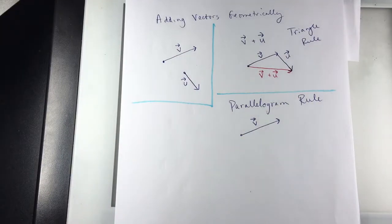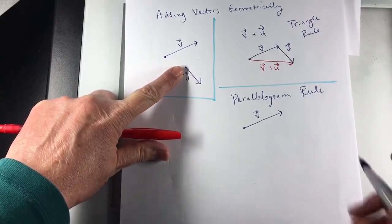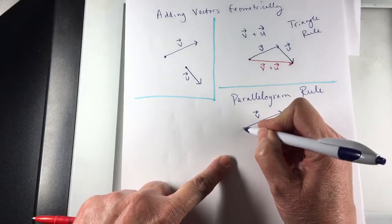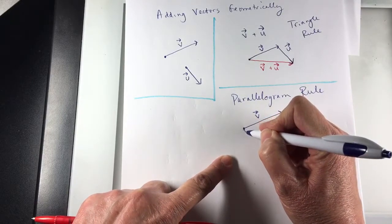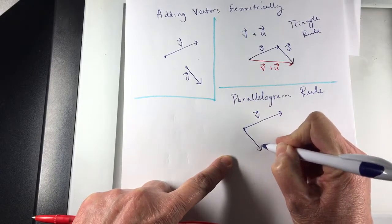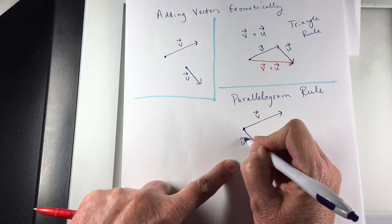For the parallelogram rule, I'm going to take U and put the two tails together. So put the two initial points. I'll draw U, but with the initial point of U on the initial point of V.